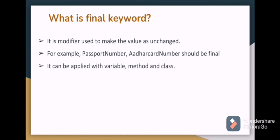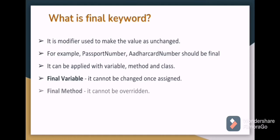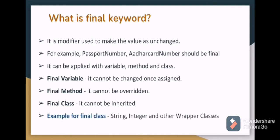Where we can apply this final? To variables, methods and class. If we apply the final keyword to variable, then it cannot be changed once assigned. If you apply that to method, then that final method cannot be overridden. If it is applied to class, then that final class cannot be inherited, that is it cannot be extended. Some of the available final classes are String, Integer and other wrapper classes.